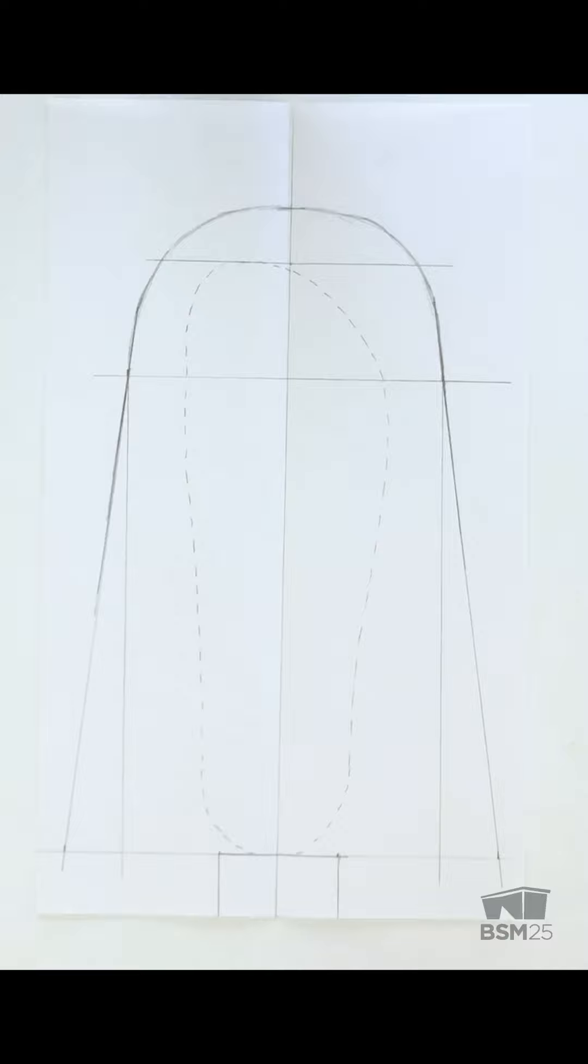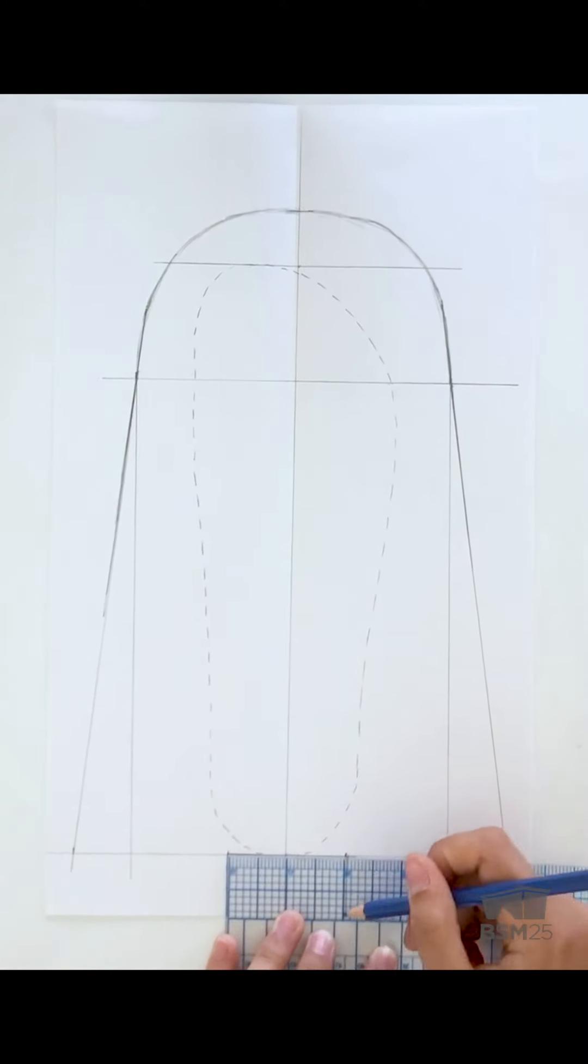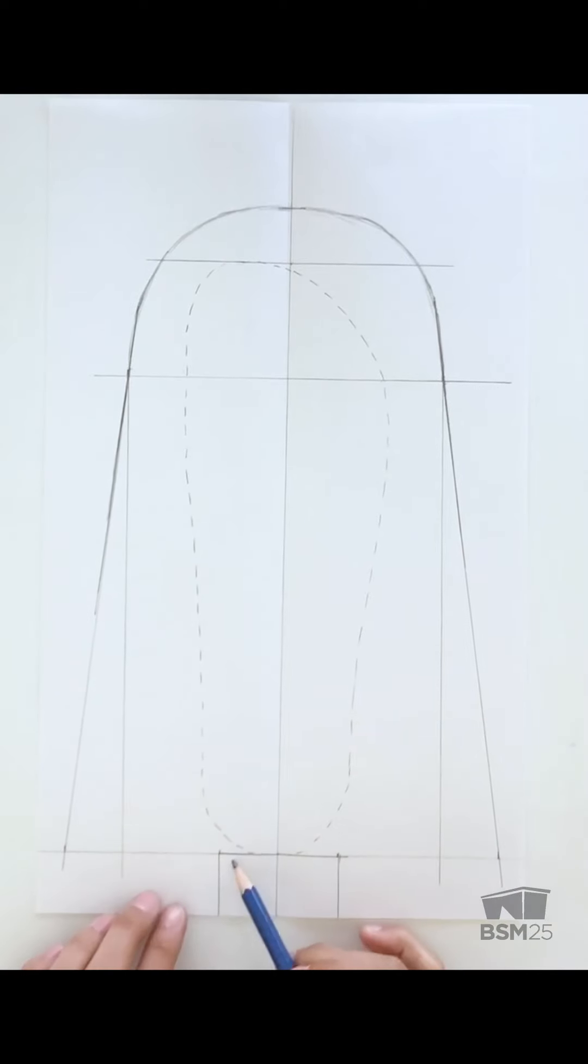The next step is going to be creating a 2 by 1 inch box at the bottom of the heel. So I've just taken my ruler and I've created a 2 inch by 1 inch box. This part is going to be cut out when we cut out the pattern.